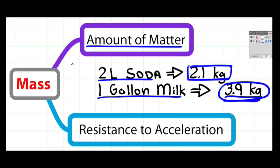So definition 1, mass is a measure of the amount of matter. Definition 2, mass is a measure of the resistance to acceleration.